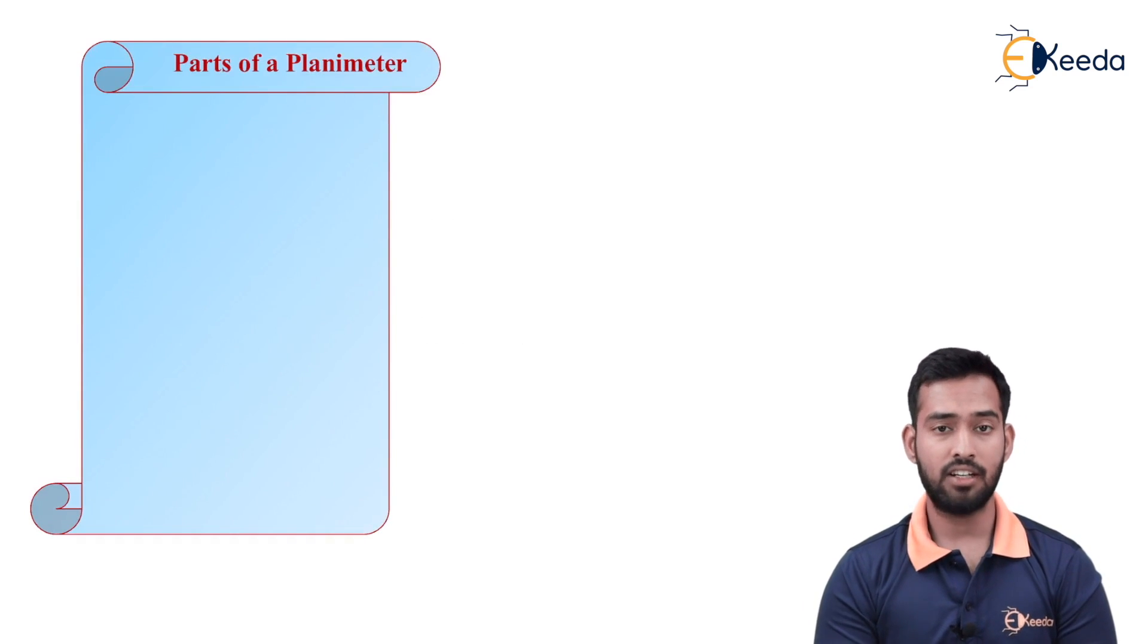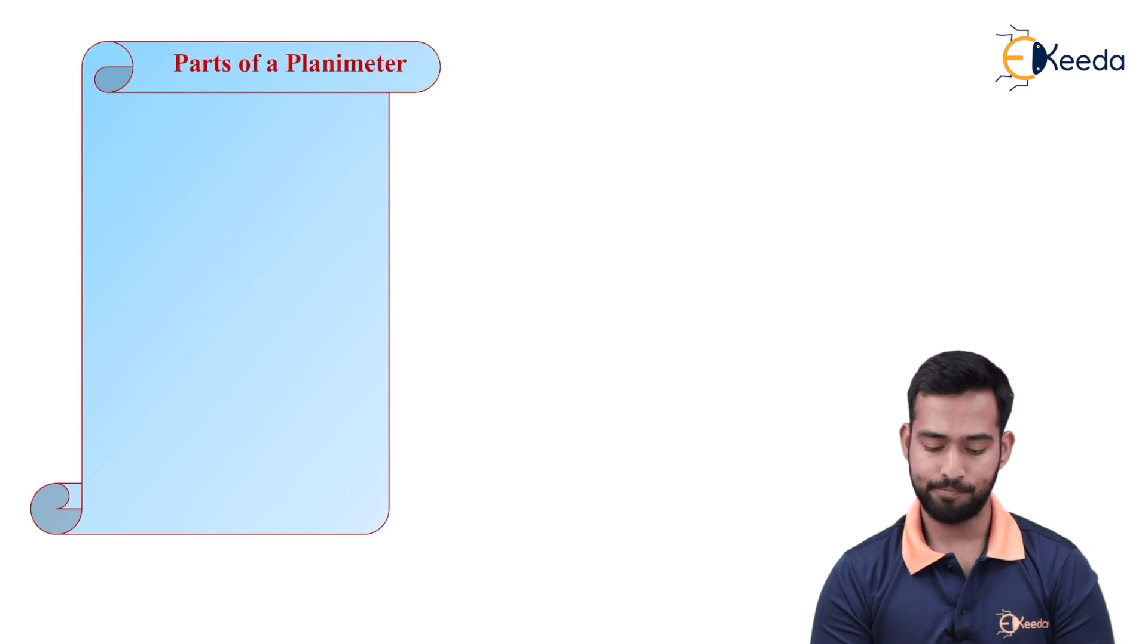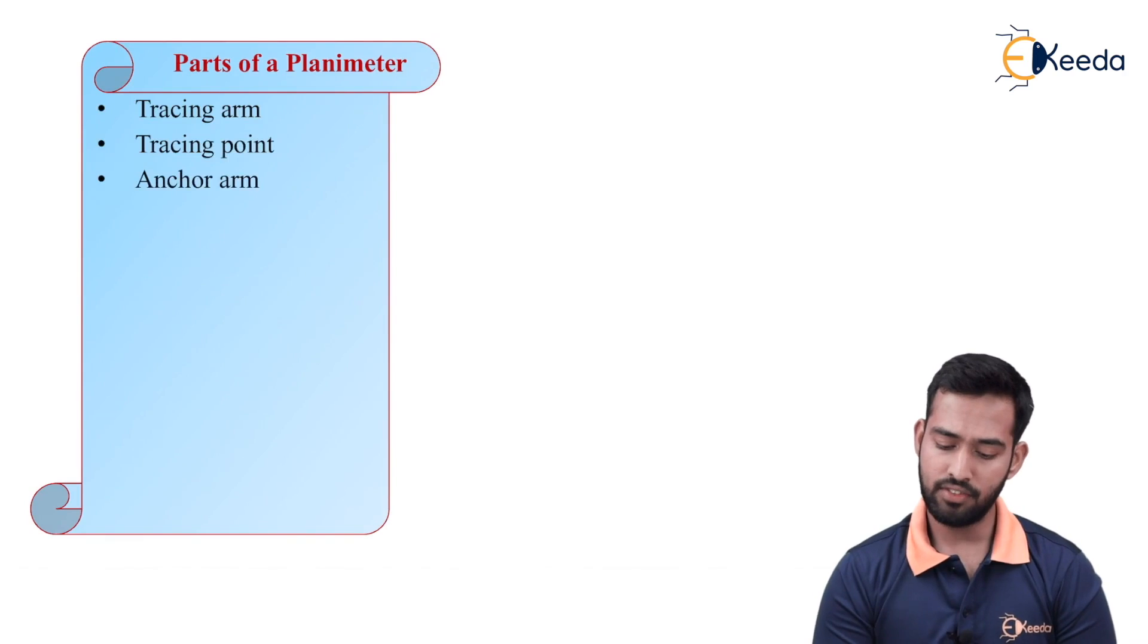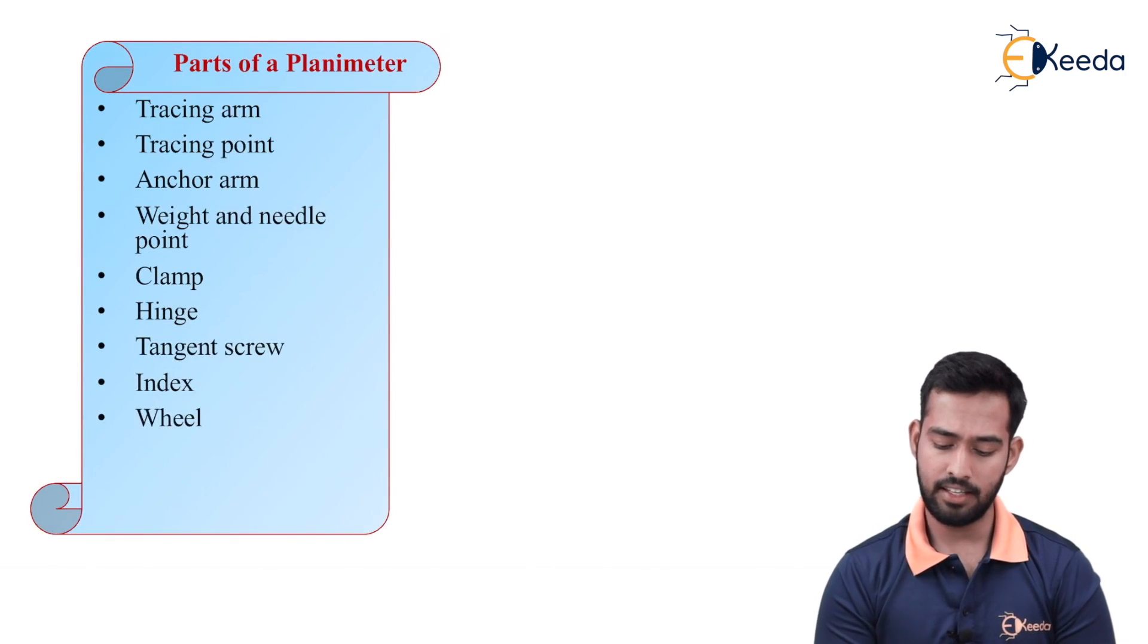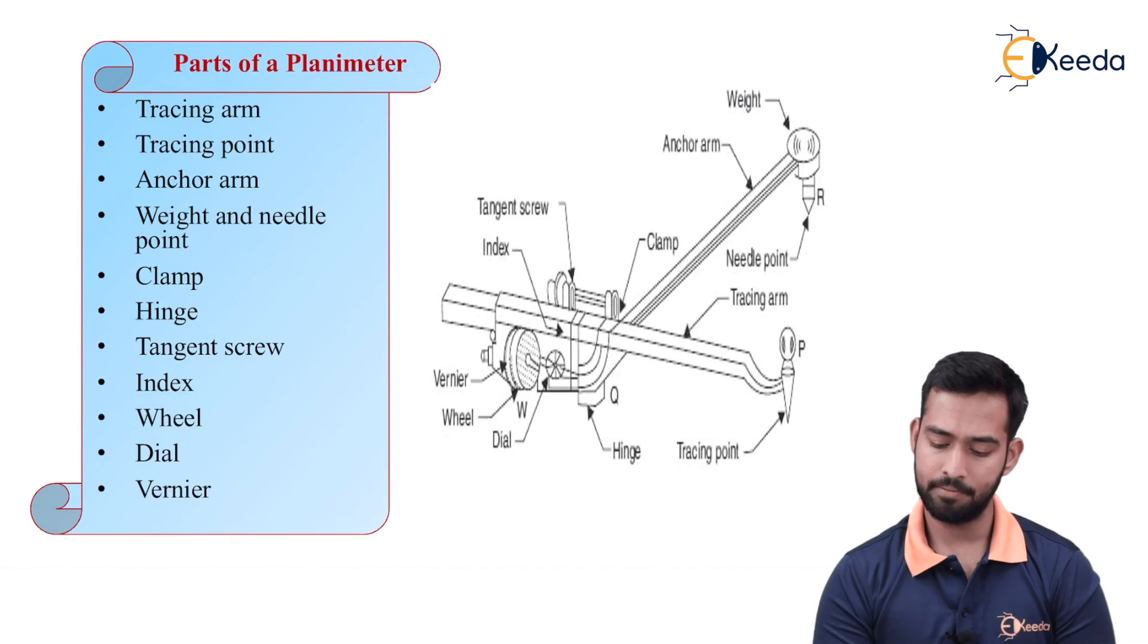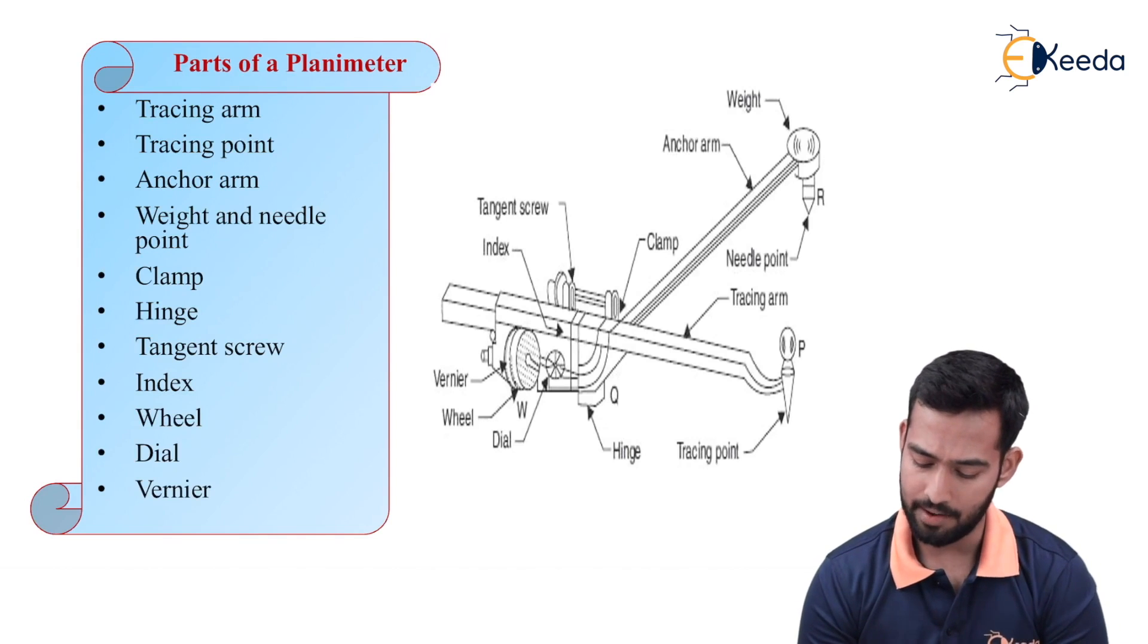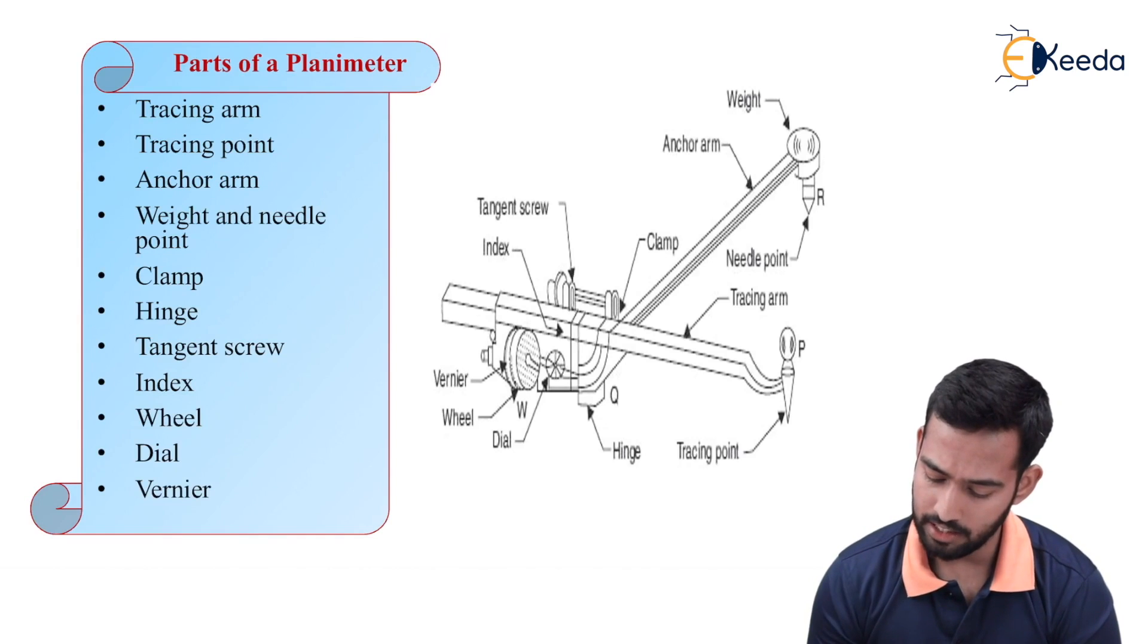The next slide, we will see what are the parts of planimeter. Now, first is your tracing arm. So we will see the figure first. In the figure, we will explain each point in detail. Over here, as we can see, first is your tracing arm.